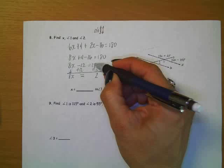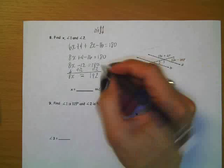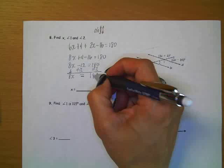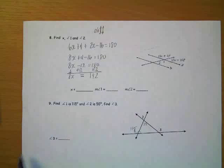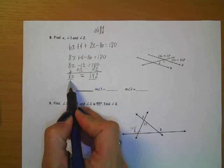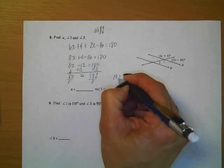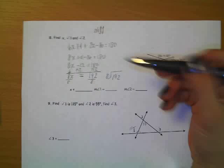0 plus 2 is 2. 8 plus 1 is 9. 1 plus 0 is 1. So you got 192. So now the x is being multiplied by 8. So we divide 8 on both sides to get x by itself.